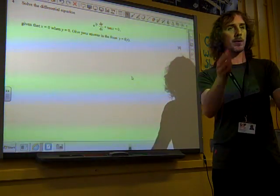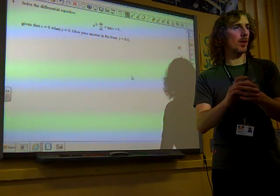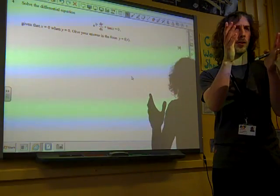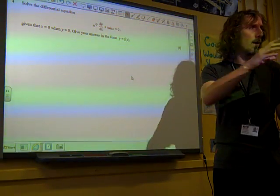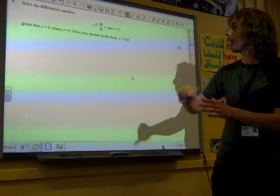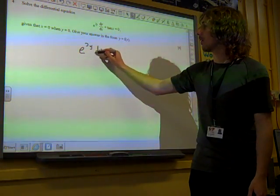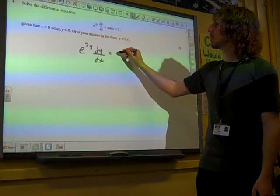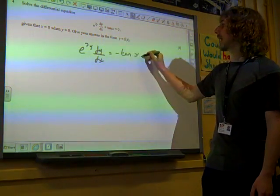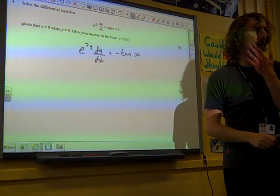Remember, before we do anything else, we need to get it so that we've got whole expressions on the left involving y, and on the right involving x. So let's rearrange this before we do anything else. We've got e to the 2y, that's quite nice because that's in the right place already, is minus tan x.